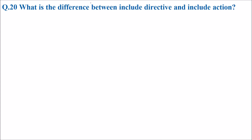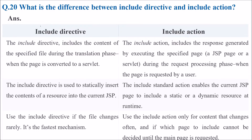What is the difference between include directive and include action? The include directive includes the content of the specified file during the translation phase, when the page is converted to a servlet. The include action includes the response generated by executing the specified page — which may be a JSP page or a servlet — during the request processing phase, when the page is requested by a user.